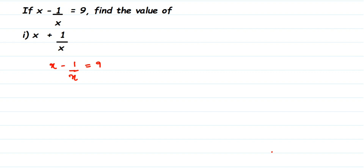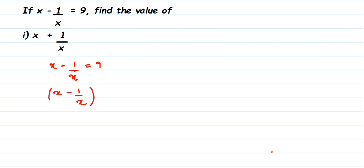There is no power here — there's only x, no x square or x cube or x to the power 4. So what I'm going to do is first make sure I get a positive sign. We have a negative sign right now, so I'm going to take the square of both sides of the equation. I'm squaring to get the positive sign, and then I'll explain how to get x plus 1 by x. So squaring both sides: x minus 1 by x whole square is equal to 9 square.